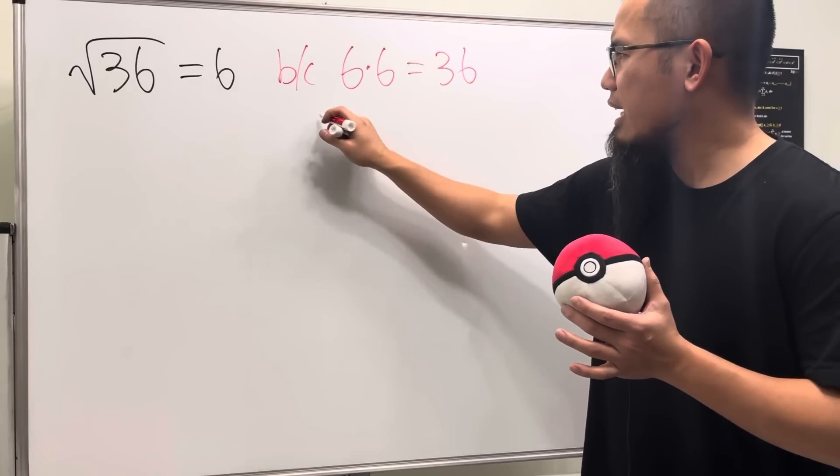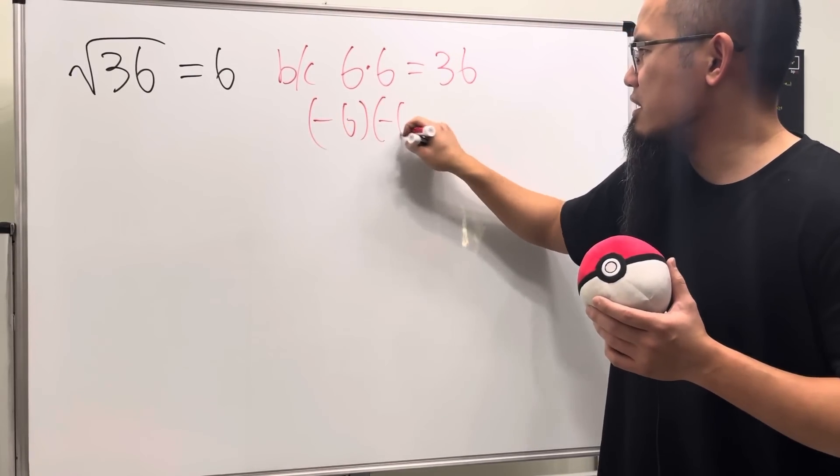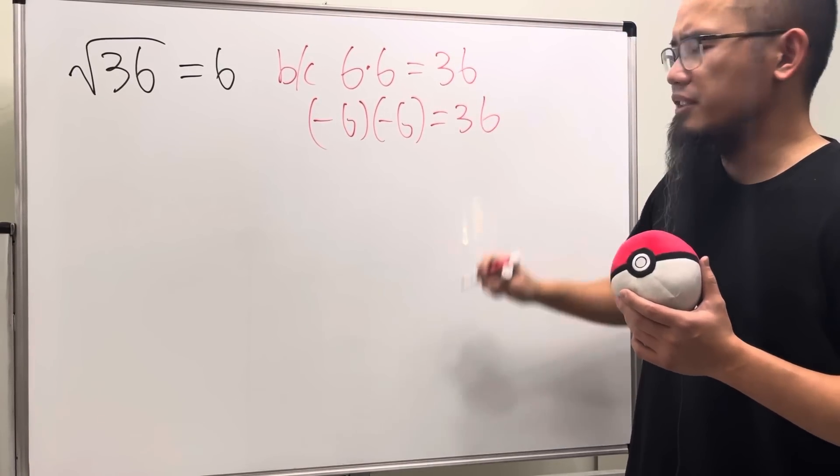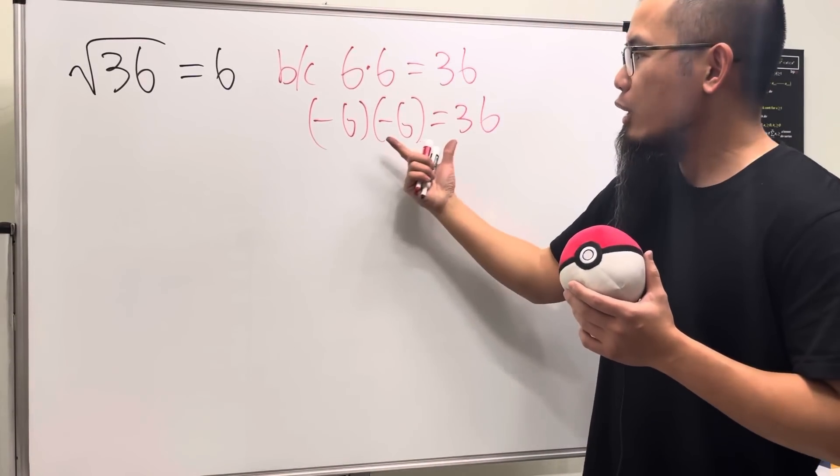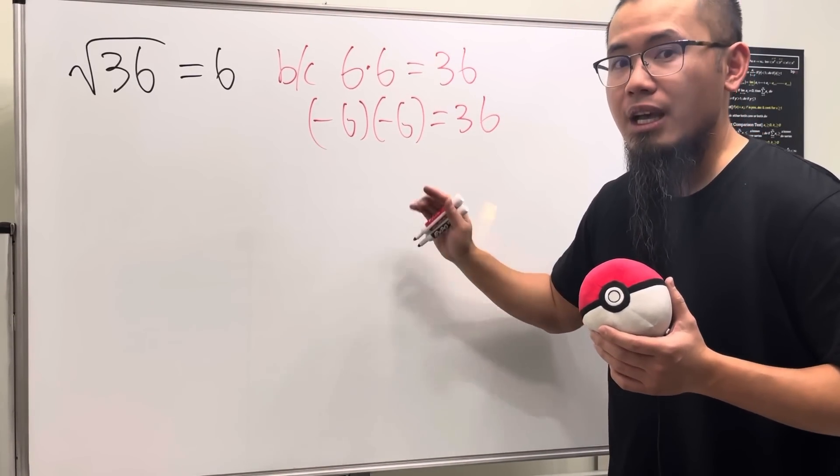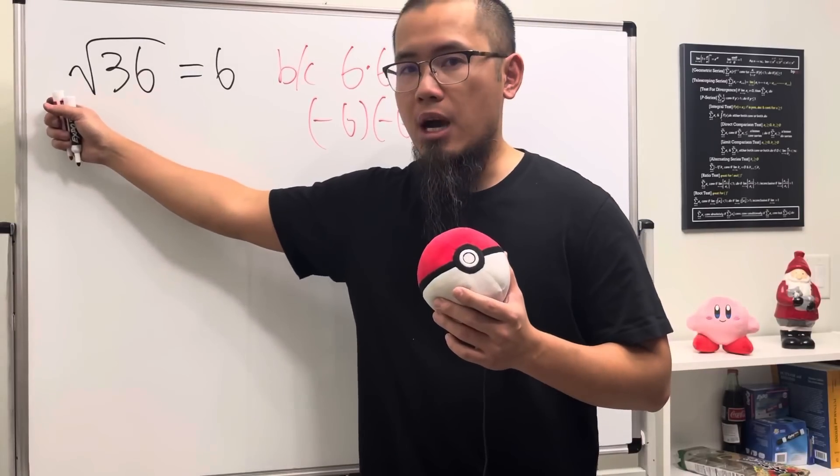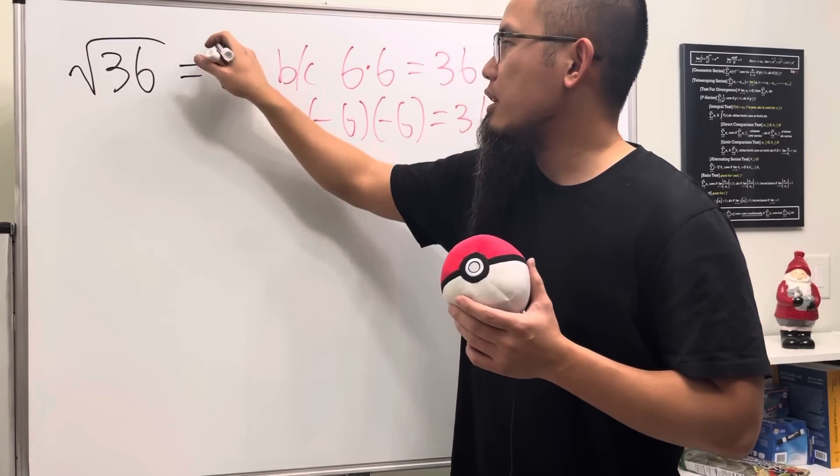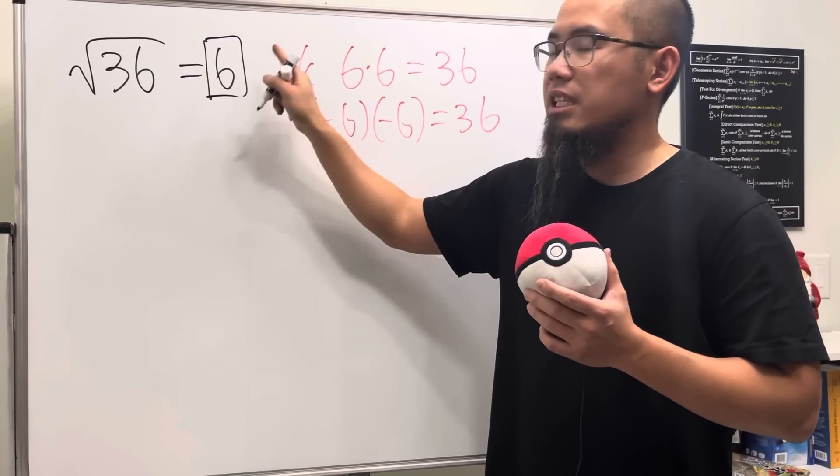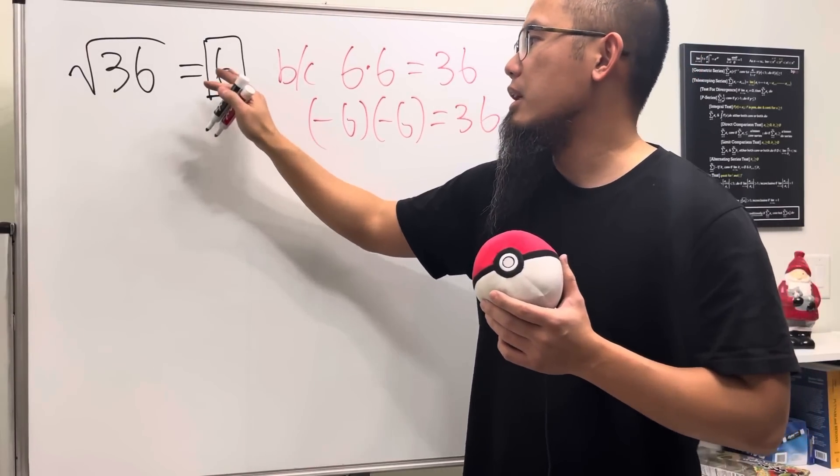But, isn't that negative 6 times negative 6 also gives us 36? Yes, I agree with this 100%. However, when we are trying to compute the square root, the answer is just going to be the positive number that we have, namely, positive 6.